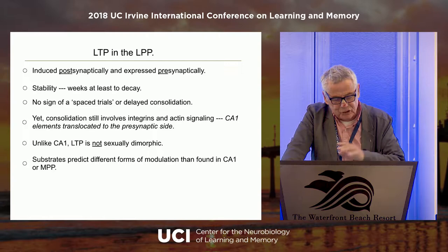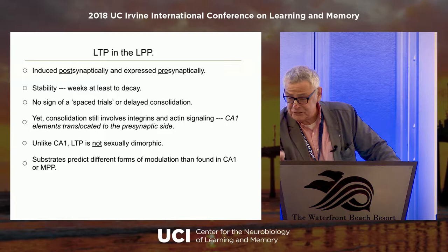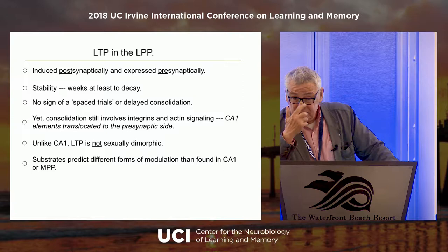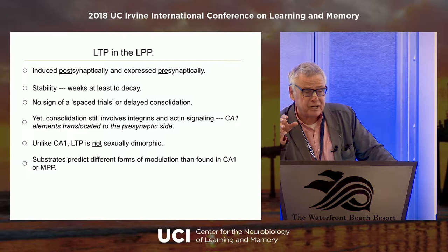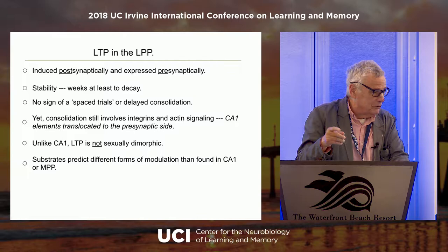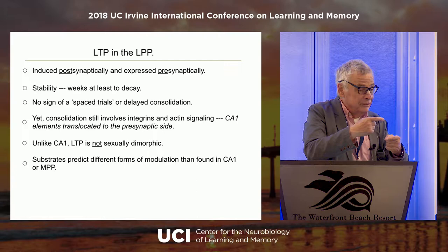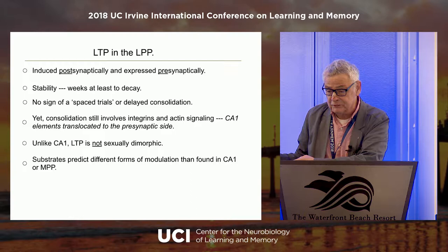The substrates predict different forms of modulation than found in CA1 or the medial perforant path. I predict that state modulation of LTP, by using different forms of LTP in different locations, will allow you to adjust which pathways and what types of information you're going to encode via working on these differential LTP mechanisms.